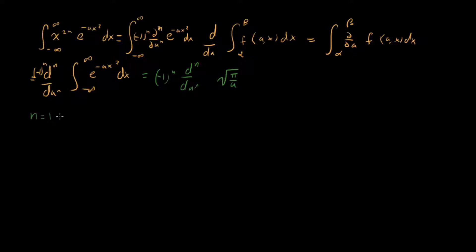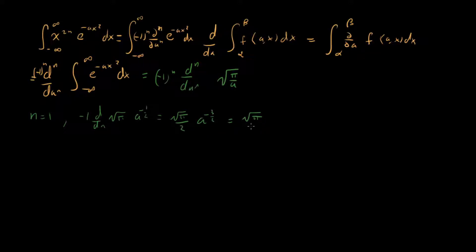For n equals one, we get minus one times the first derivative of square root pi times a to the minus one half. Taking that derivative, we pull down minus one half, giving us root pi over two times a to the minus three halves. We can also write this as root pi over two times root a times a.